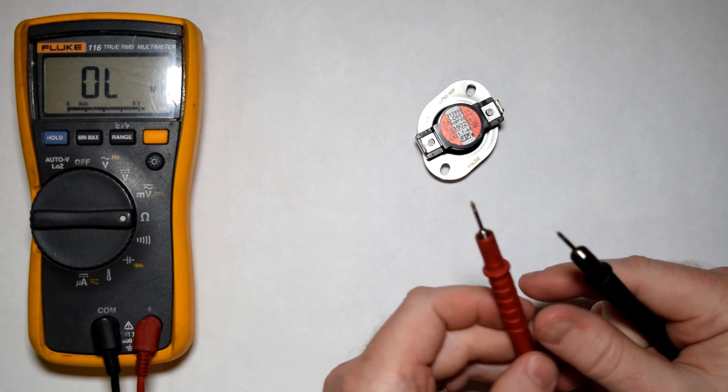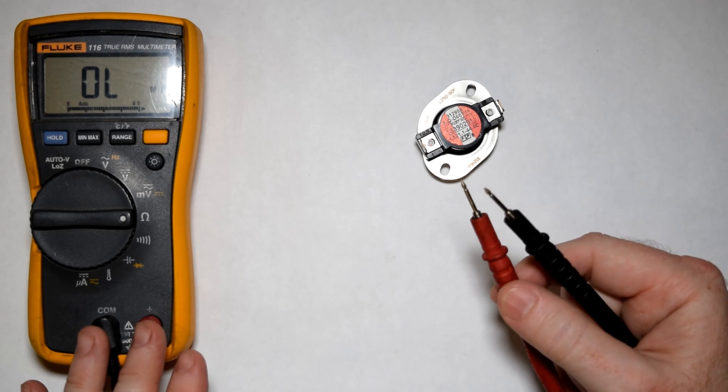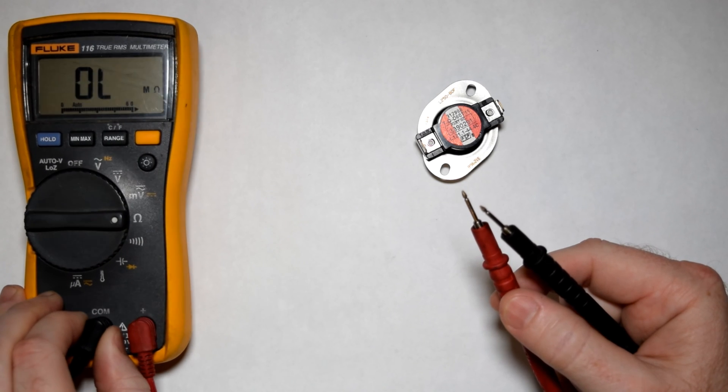Basically what an ohm test will do, first you plug in your leads. You should have a black and a red lead. Plug them into the corresponding color.